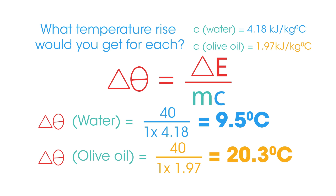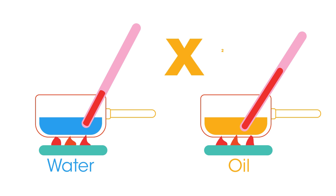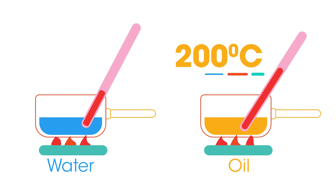Oils have a much lower specific heat capacity than water, so they heat up much quicker when exposed to an identical heat source. This is why we are often surprised how fast a pan of oil heats up when cooking. As shown, when heated under identical conditions, the same mass of oil will heat up about twice as fast as water, reaching 200 degrees Celsius in the time it takes water to boil.